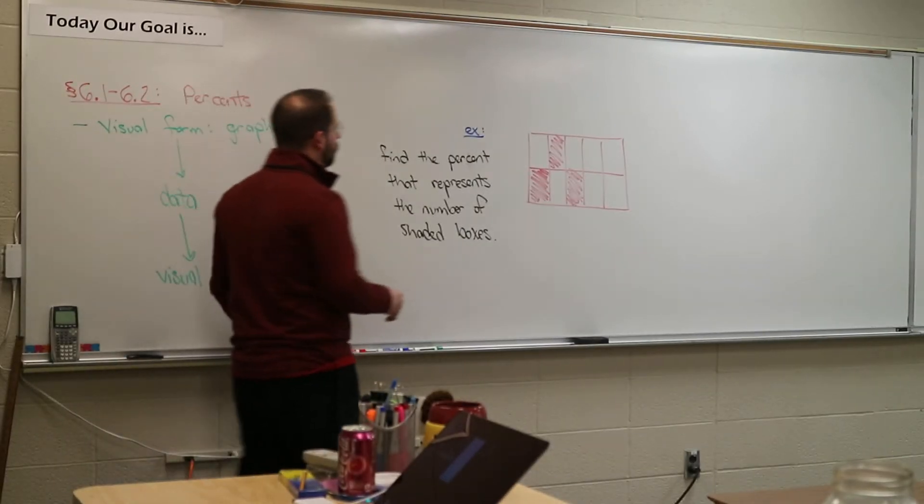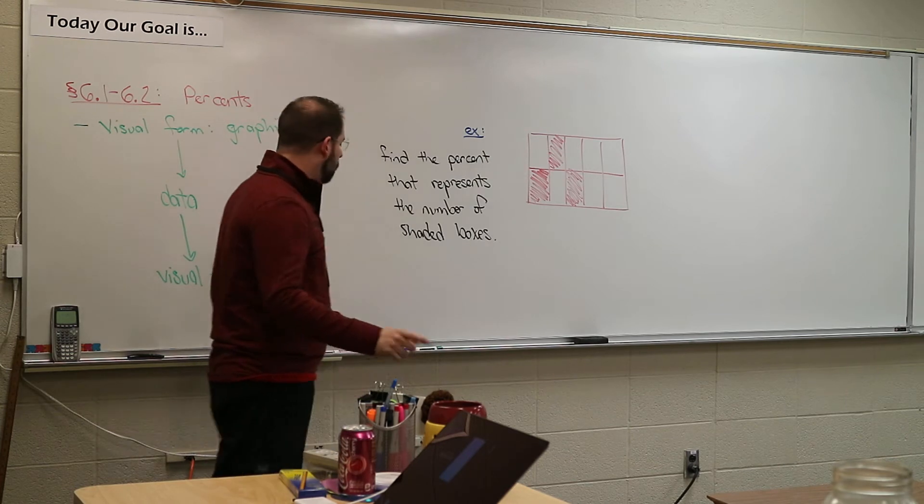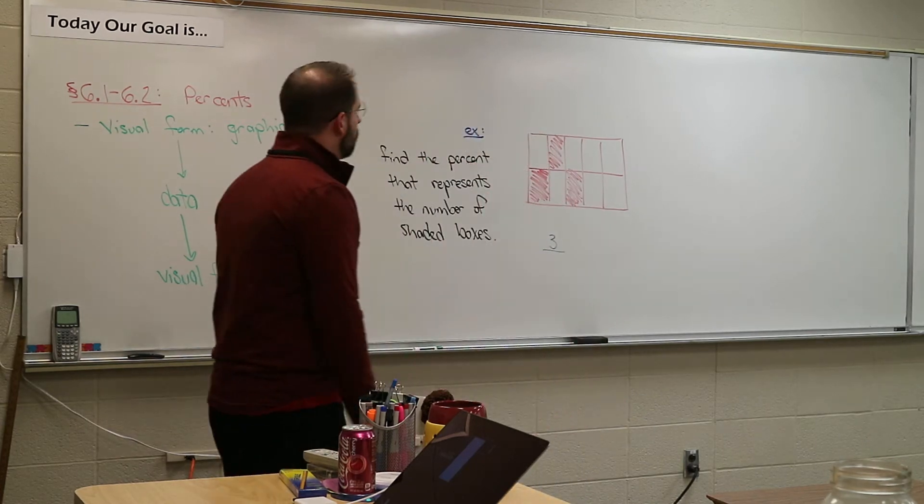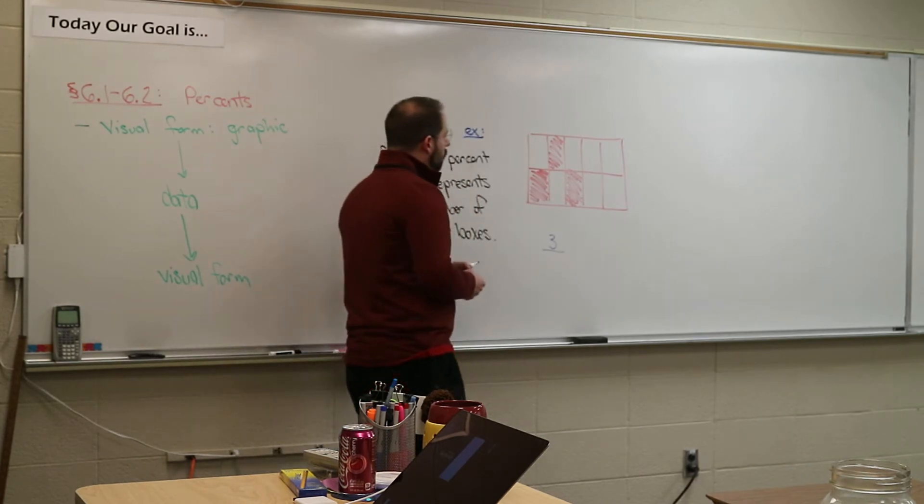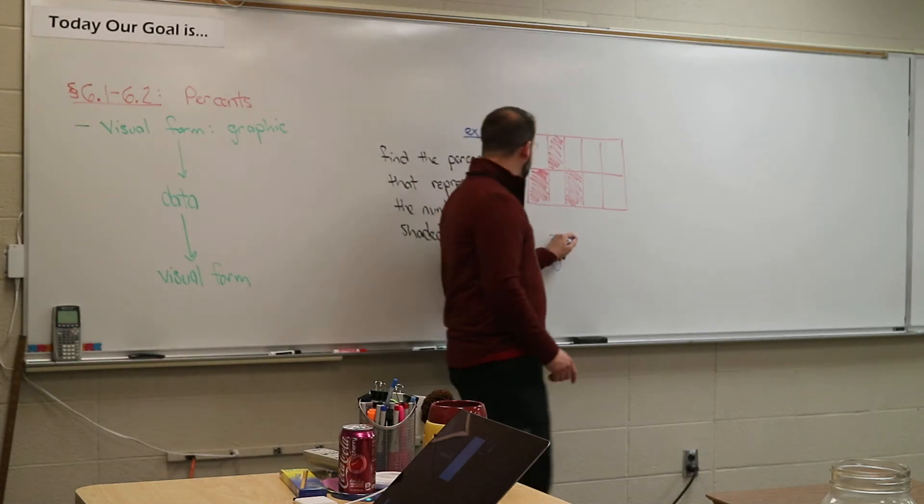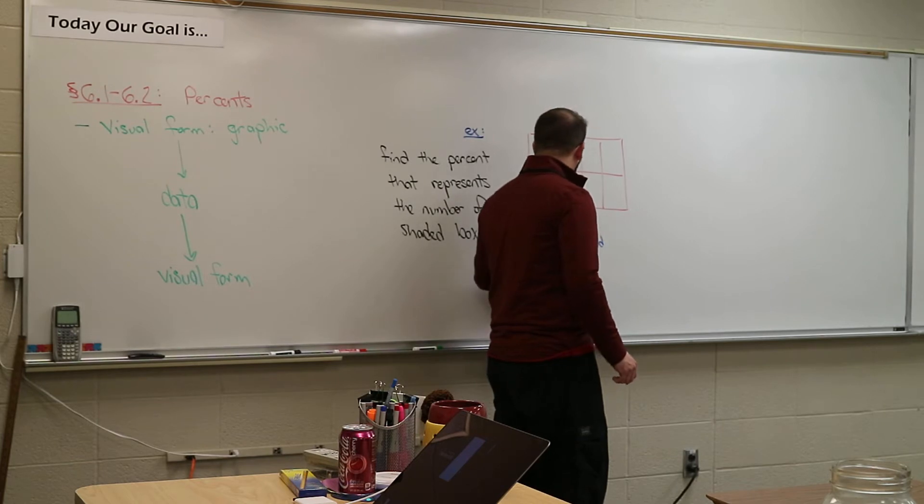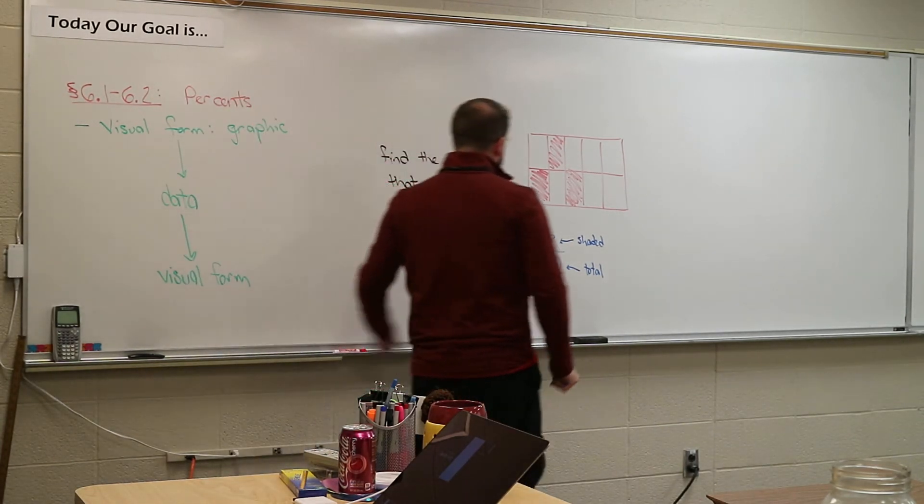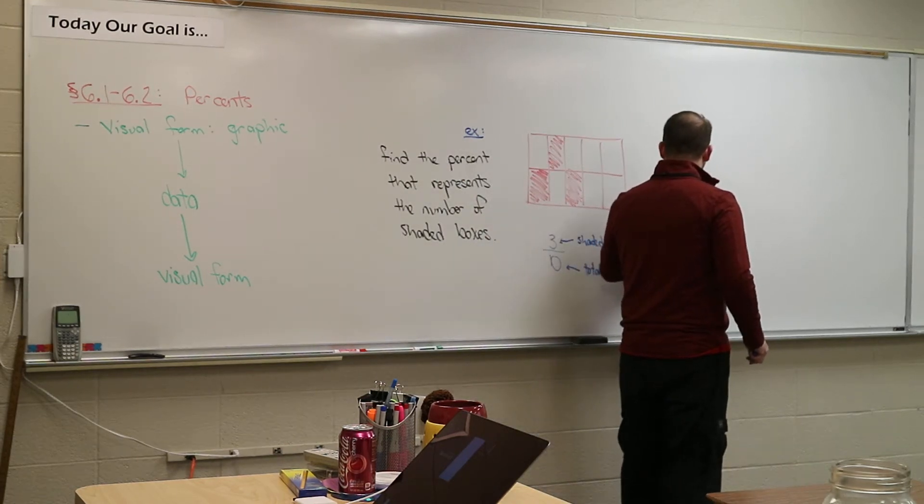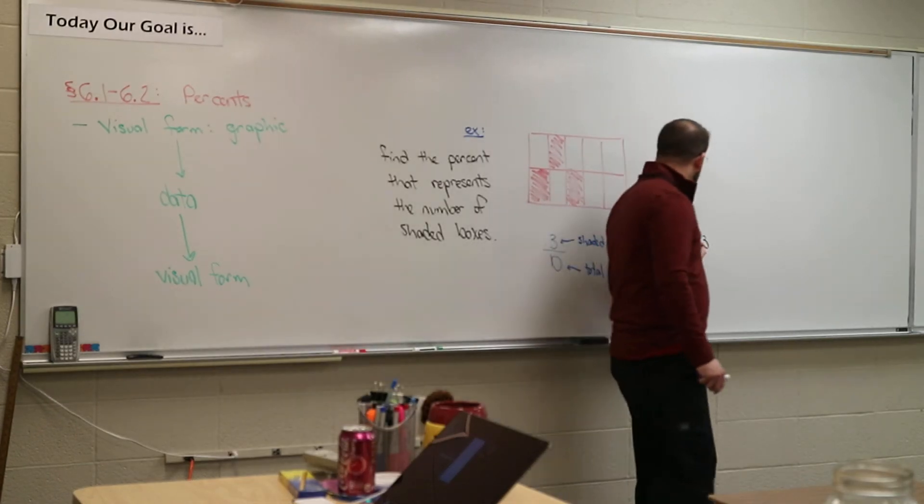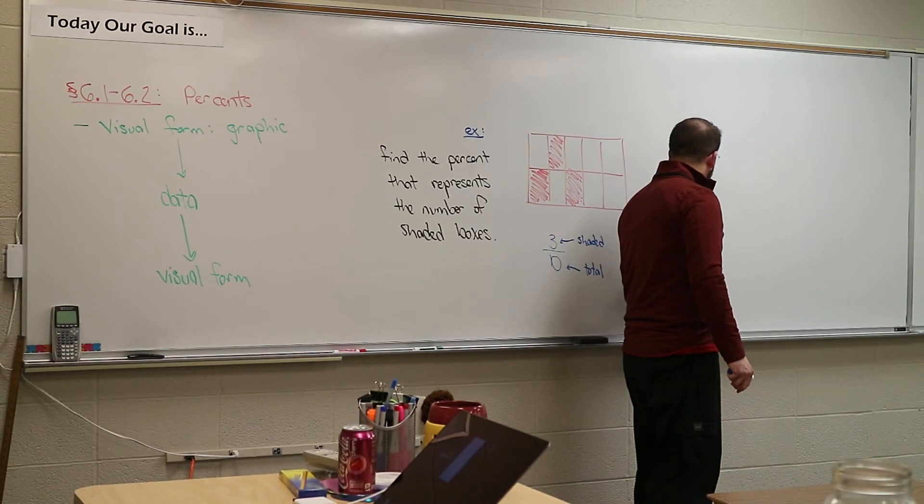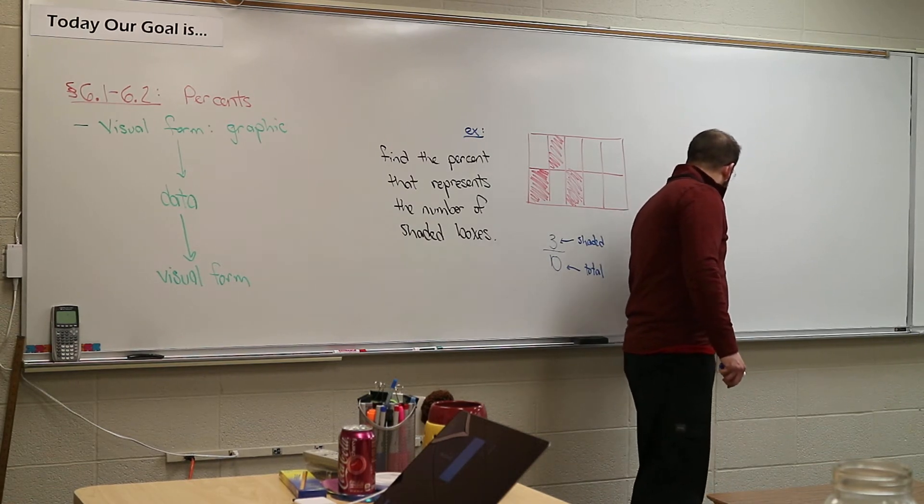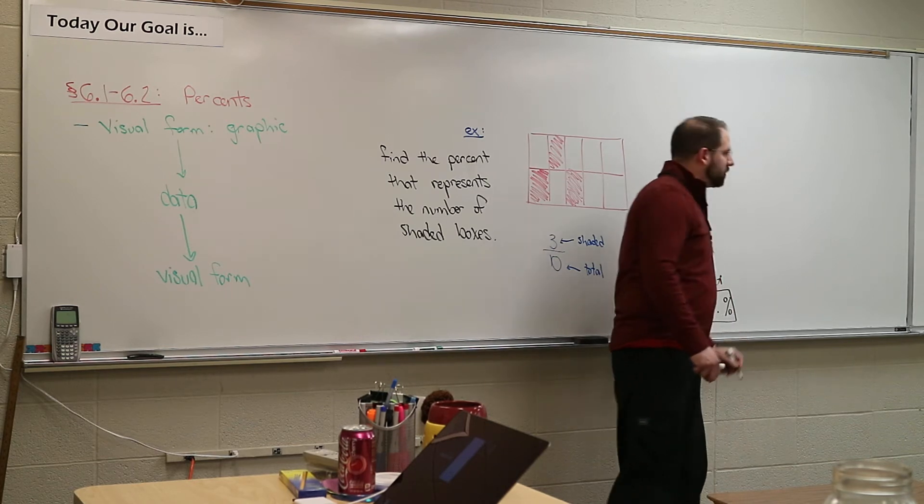To do that, number one, how many boxes are shaded? Three. So first step: three over how many total boxes are there on that picture? Ten. There's ten total boxes. On the top you're going to put the shaded, on the bottom you're going to put the total number of boxes. Then, on your calculator, take top divided by bottom: three divided by ten equals 0.3. That's in decimal form. What you have to do is take that decimal and move it back two spots. So if you move it back two spots, you have to fill in these blanks with zeroes, so it's actually 30 percent. This is the percent of shaded boxes: 30 percent of the boxes are shaded.